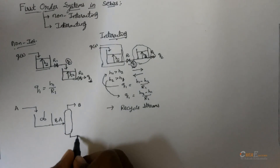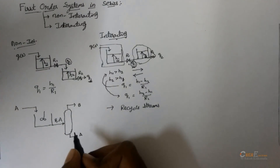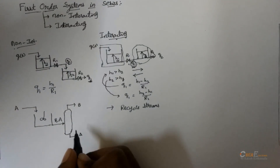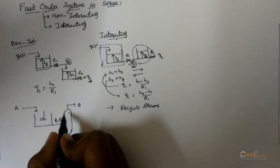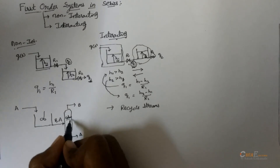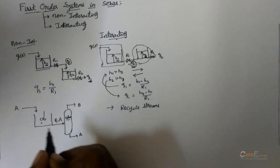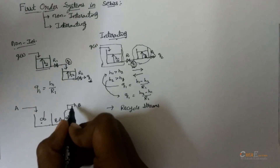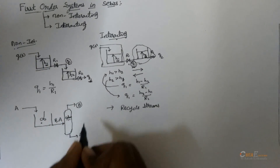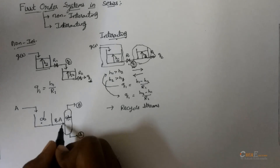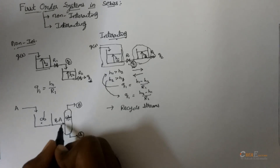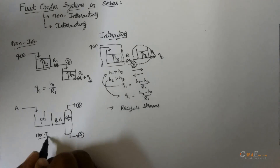Here we get B and A. Suppose if you make any changes in the column, it won't affect the reactor; it will only affect the column outputs. These type of systems are called non-interacting systems.